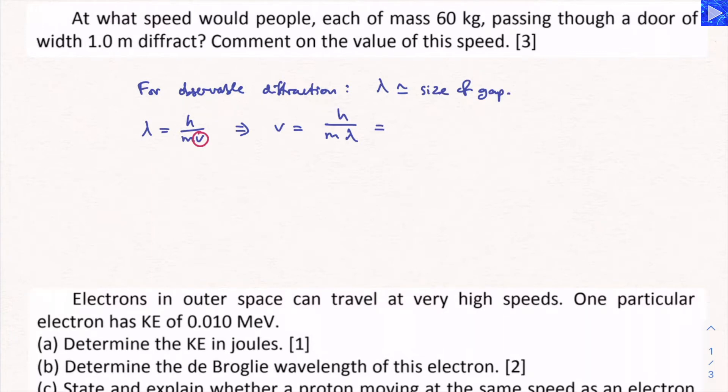Let's just substitute the values in and see what we get. 6.63 times 10 to the minus 34, that's Planck's constant. The mass of each person is 60 and the wavelength is 1 because we were given the wavelength, it's the width of the gap. Now when we substitute the values in and calculate that value,